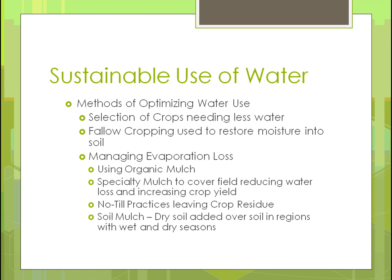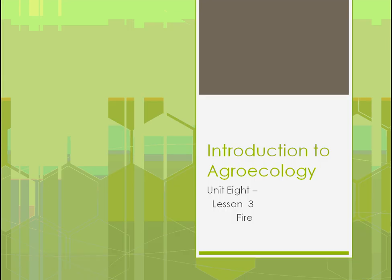Leaving crop residue acts similarly to organic mulch — it's just less visually appealing — and helps retain soil moisture. Soil mulch, where dry soil is added over existing soil in regions with wet and dry seasons, also helps reduce the chance of the soil deeper down drying out.